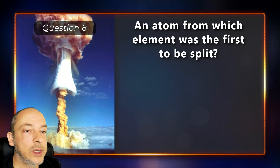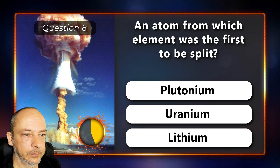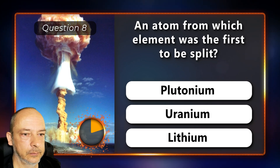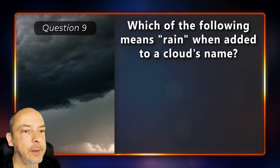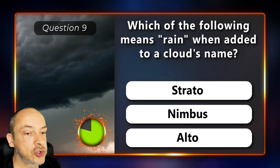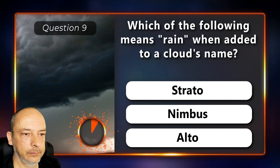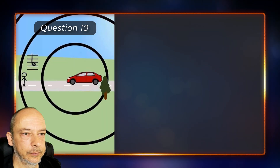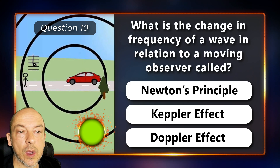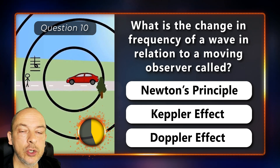An atom from which element was the first to be split — plutonium, uranium, or lithium? Lithium. Which of the following means rain when added to a cloud's name — strato, nimbus, or alto? And what is the change in frequency of a wave in relation to a moving observer called — the Newton principle, Kepler effect, or Doppler effect?